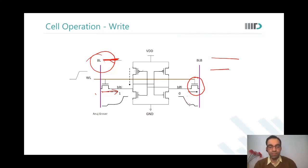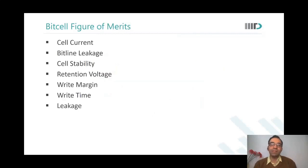Beyond area, there are some electrical figures of merit which are cell current, also called as read current. Then there is bitline leakage, cell stability - we looked at very fleetingly today, we will look at it in more detail in the next class.